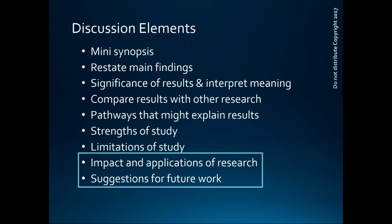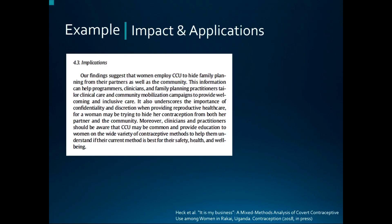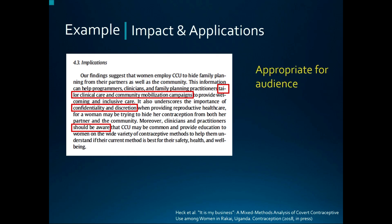Finally, let's look at examples of impact, applications, and suggestions for future work. This is an article from Heck et al. in the journal Contraception — it's nicely written with appropriate applications given the cross-sectional study design. Their suggestions include tailoring care to be welcoming and inclusive, using confidentiality and discretion when providing care, and being aware that women may be hiding their use of contraception. The applications are written for clinicians likely to be reading Contraception, so they're appropriate to the audience — realistic, not too ambitious, and hard to argue against.